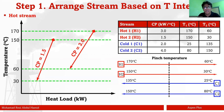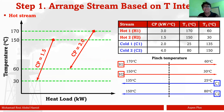I do the same for the hot streams, which go from higher to lower temperature. H2 needs to be cooled from 150 to 30°C, with CP of 1.5. H1 needs to be cooled from 170 to 60°C, with CP of 3.0. Now I can identify the temperature intervals for the hot streams: 170 to 150 is the first interval, 150 to 60 is the second, and 60 to 30 is the third.